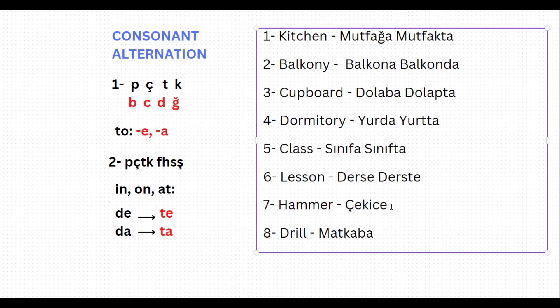Let's go on. 'On the hammer': çekiç. Let's check the last letter of the word, which is ç — it's one of peçeteğe or fehseşe. Again, the suffix needs to change. On the hammer: çekiçte.